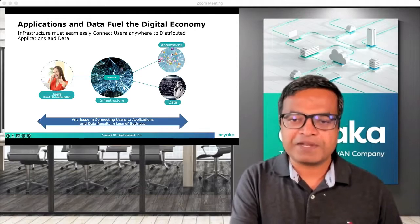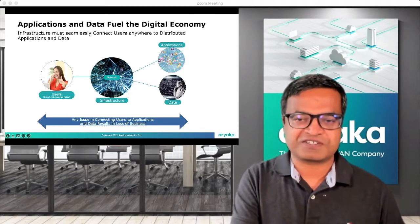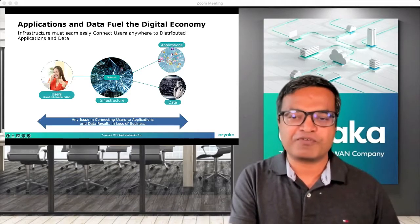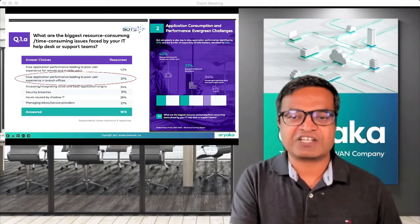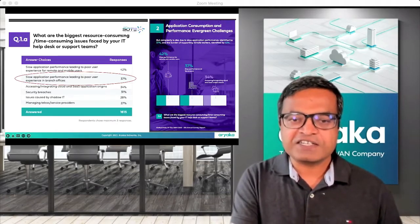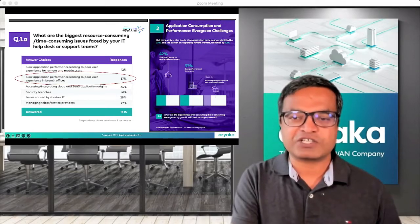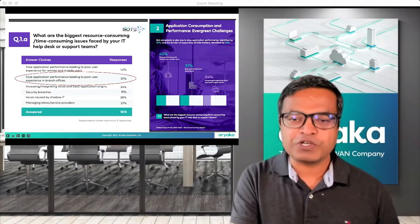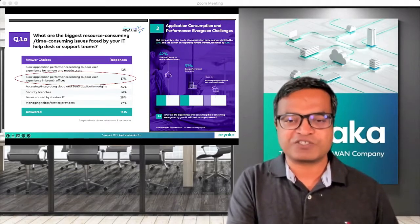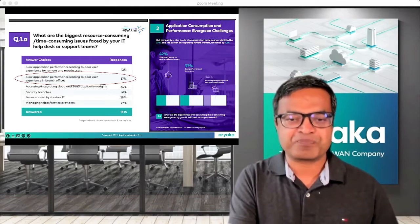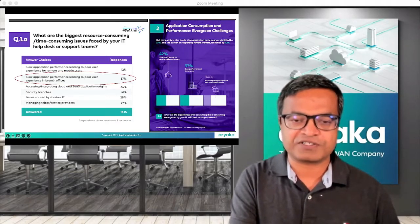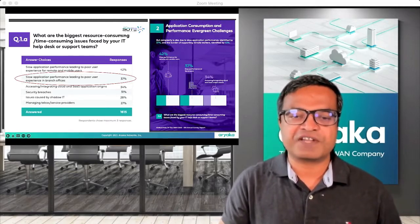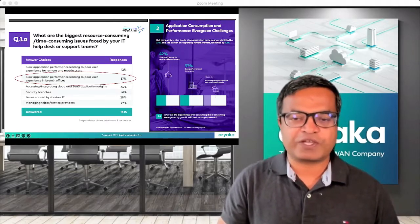In today's digital economy, applications continue to remain critical to businesses. As a result, ensuring application performance has become the center of IT strategy. As stated in Ariyaka's 2022 State of the WAN survey, 37% of respondents indicated that slow application performance leading to poor user experience in branch offices is the biggest resource-consuming issue faced by IT teams, with a similar concern for remote and mobile users expressed by 42% of surveyed respondents. This underscores the importance of delivering superior application experience to enterprise users.